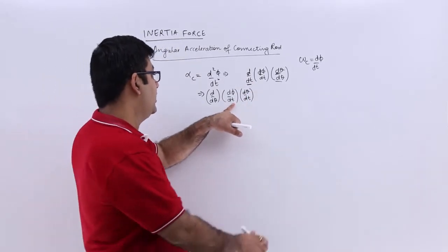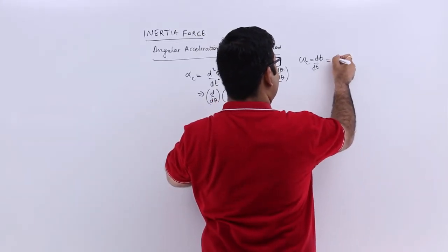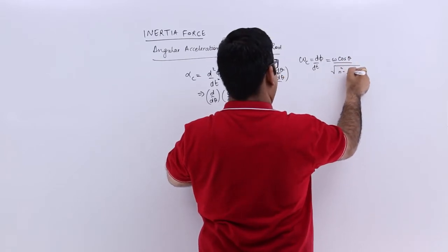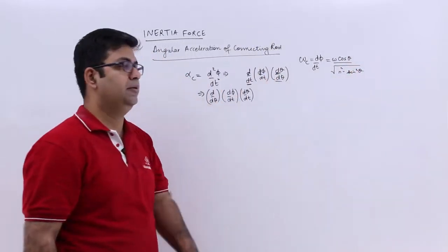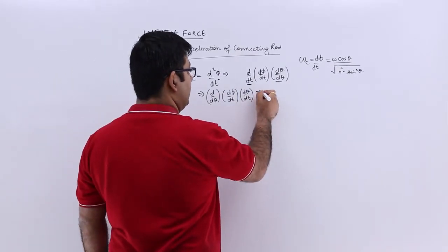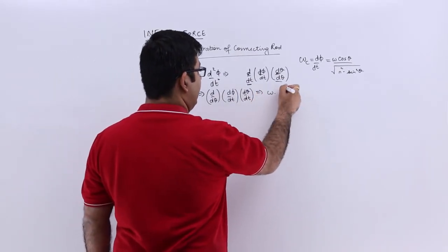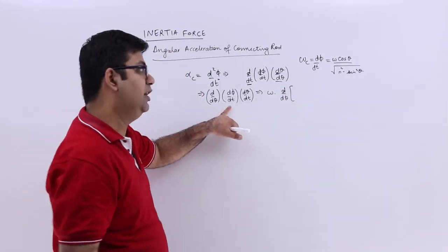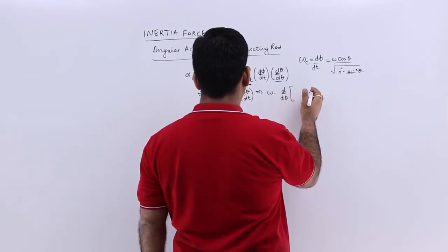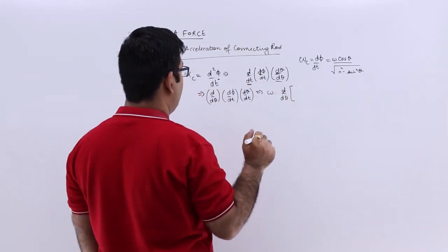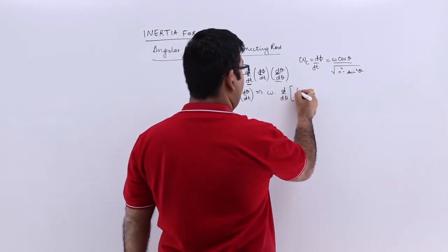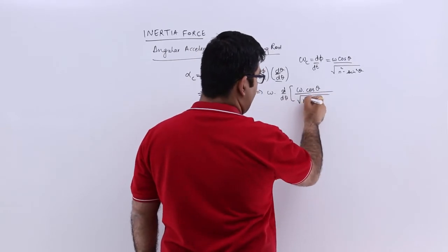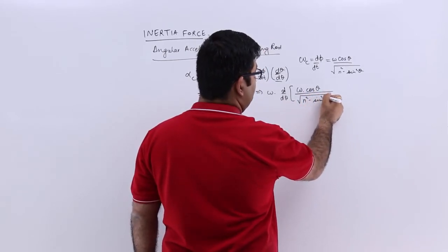This is equal to omega into cos(theta) upon under root of (n² − sin²(theta)). So you will get omega into d(phi)/d(theta), which equals omega into cos(theta) upon (n² − sin²(theta)).